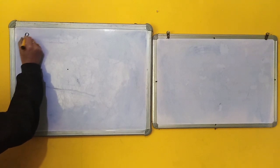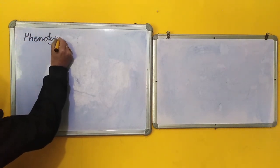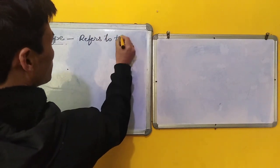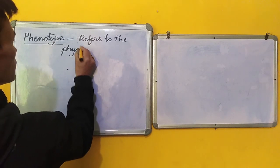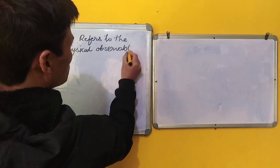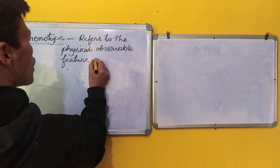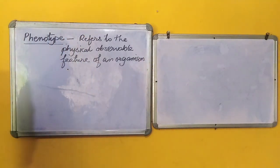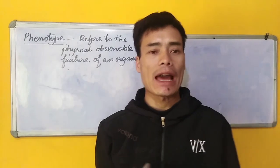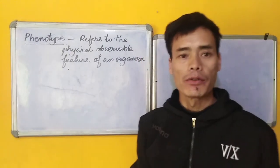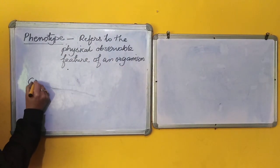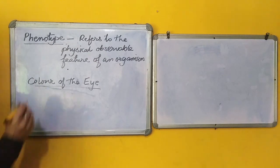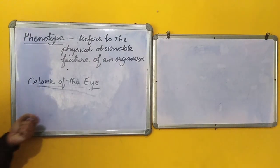The next term that we come across is phenotype. Phenotype refers to the physical observable feature of an organism. So here, the phenotype can be any visible characteristic that an organism carries. For example, color of the eye, which can be visualized, and this is nothing but a phenotype.